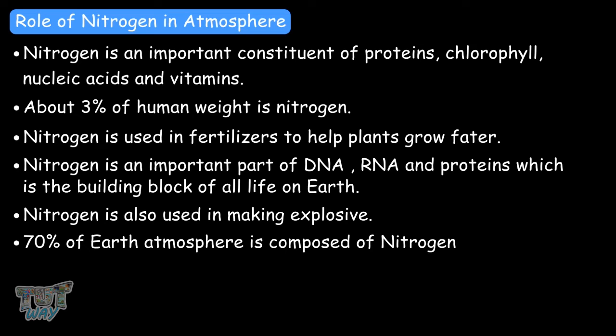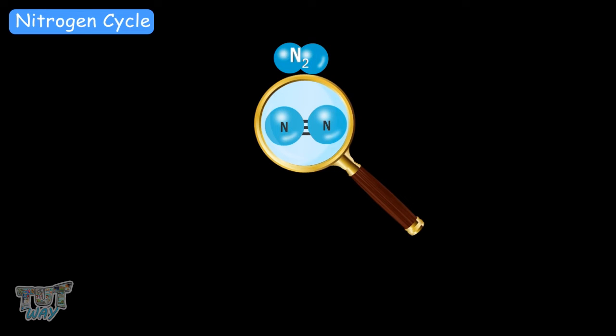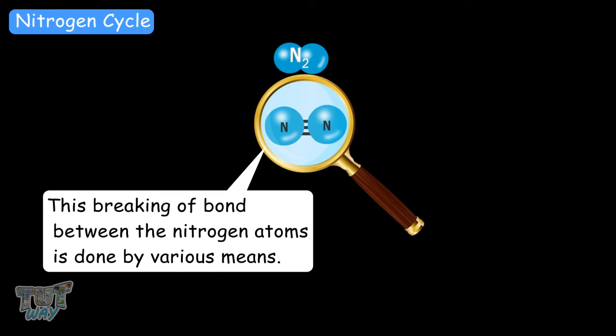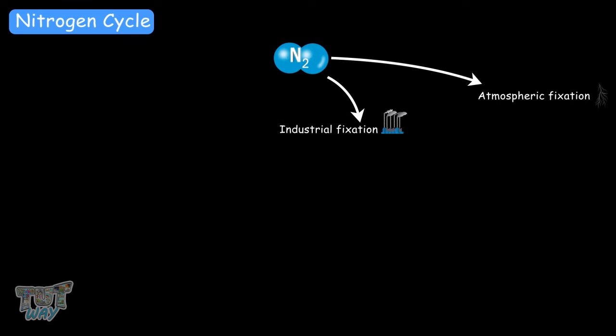Now let's revise the nitrogen cycle. Nitrogen exists as nitrogen gas, where each molecule has two atoms of nitrogen bonded together. The bond between them is very strong, which is why it cannot be used by any living organism without fixation — the breaking of their bond. This breaking of the bond between nitrogen atoms is done by various means. The three ways of nitrogen fixation are: industrial fixation, atmospheric fixation, and nitrogen-fixing bacteria.